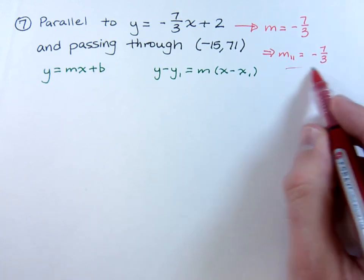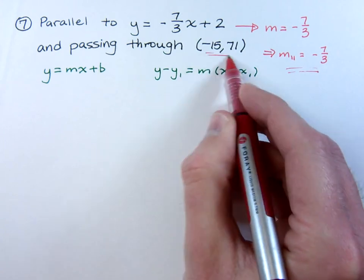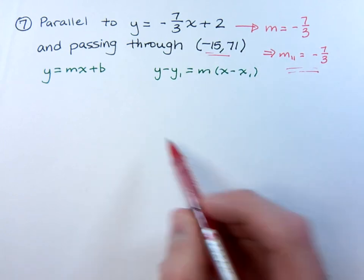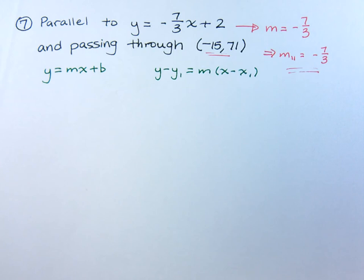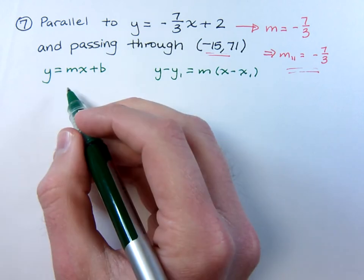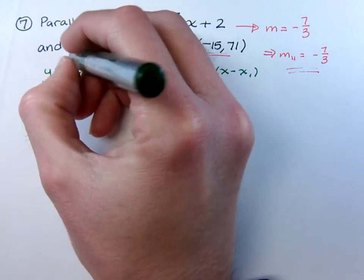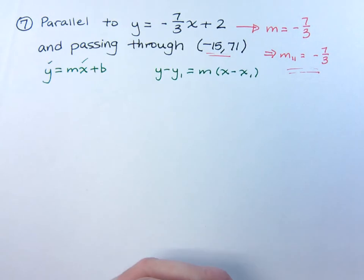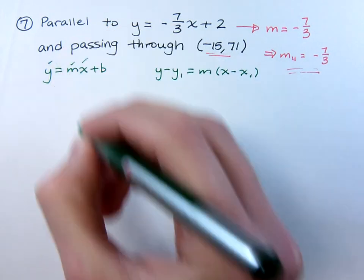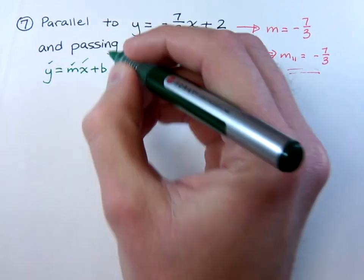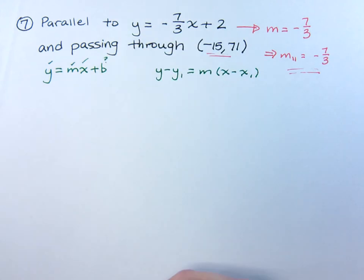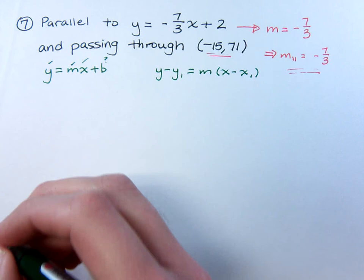So you've got your slope and you've got a point that you go through, so you just put that together in one of these forms. Now, if you use the slope intercept form, you have your x and your y, you have your slope, and the only thing that we don't know is our y intercept, or the y coordinate of the y intercept. So plug in that information and see what you get.